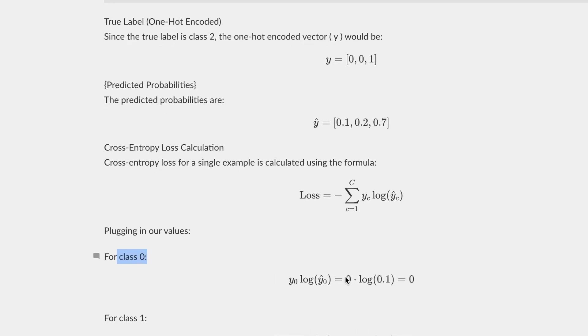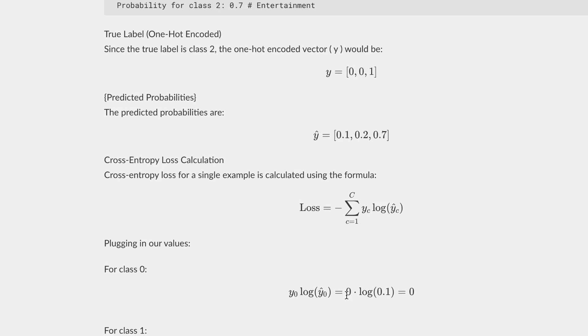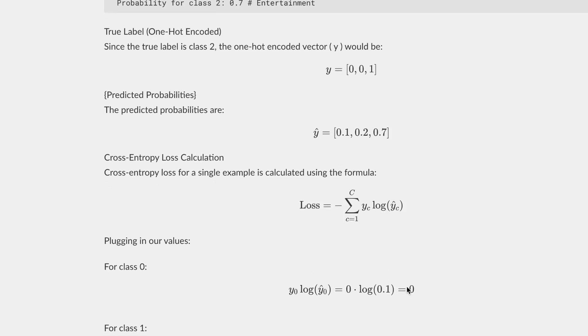For class zero, the correct value is zero times log 0.1. The zero comes from over here because it doesn't belong to class zero, which is business. So that's why you have zero times log, and then the 0.1, which is the probability. So you get zero.